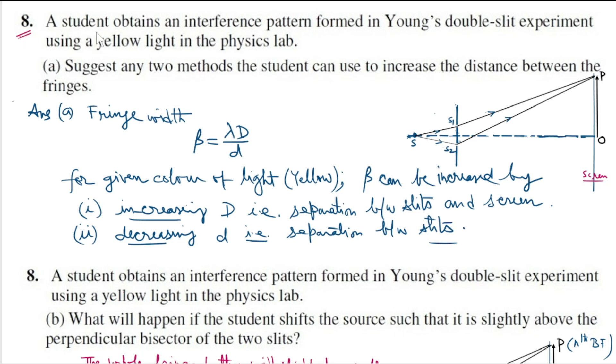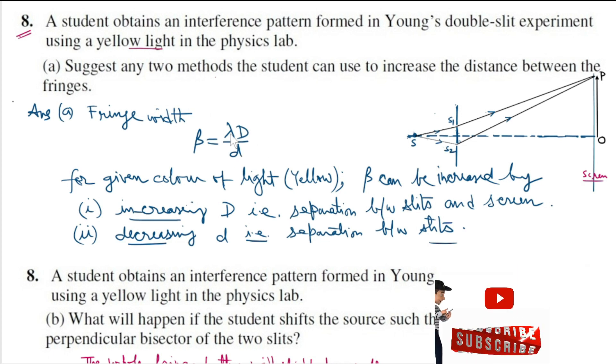In question number 8, a student has obtained an interference pattern using yellow light, and we are supposed to tell two methods by which we could increase the separation between the fringes. We know that the fringe width is given by the expression β equals λD by d.